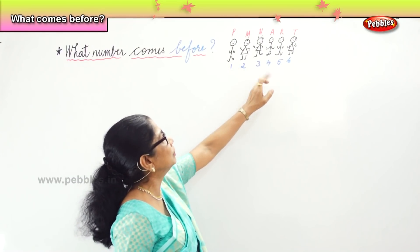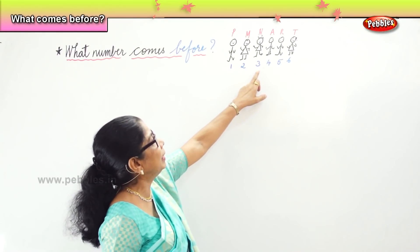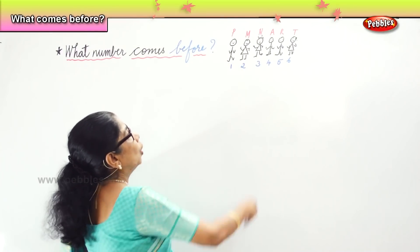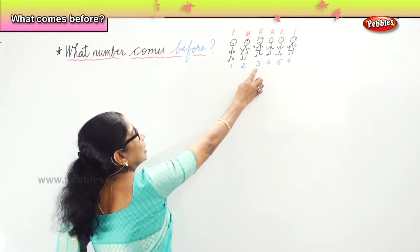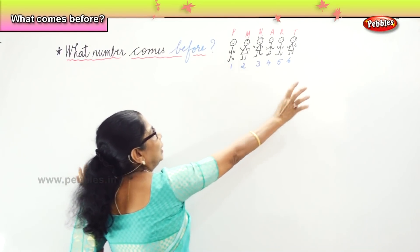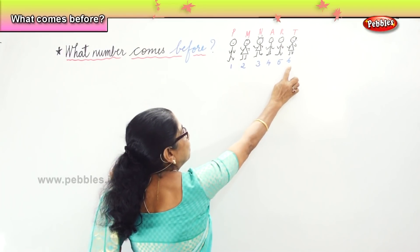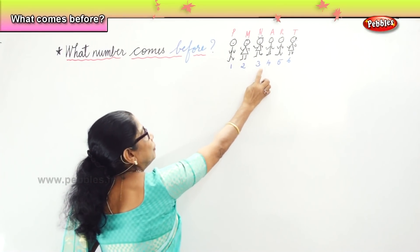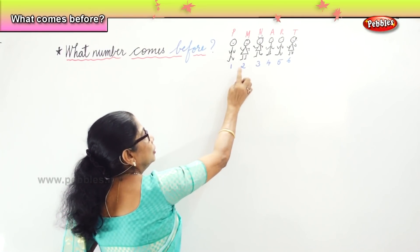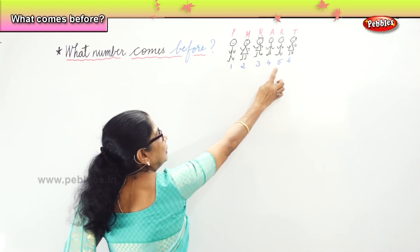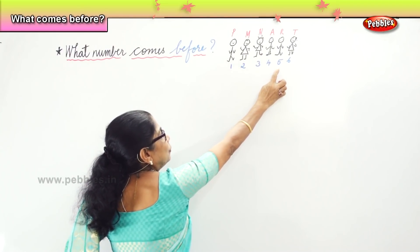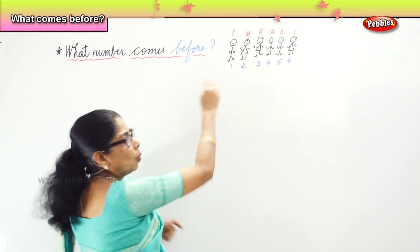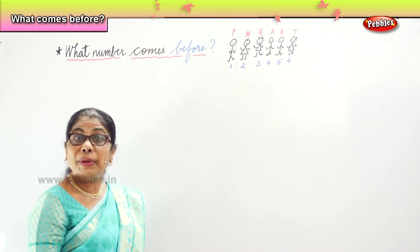What number comes after three? Four. Now here I am asking before. What number is coming before three? Two. Before six? Five. Before five? Four. Before two? One.